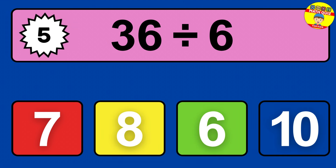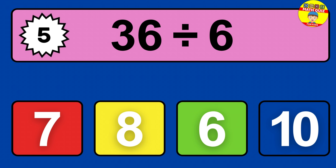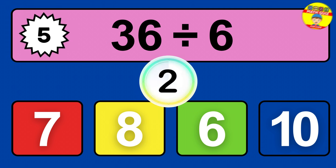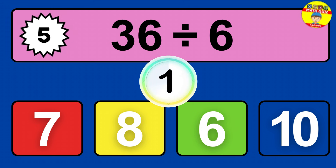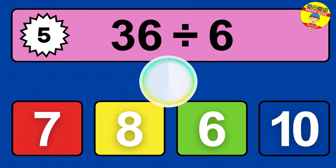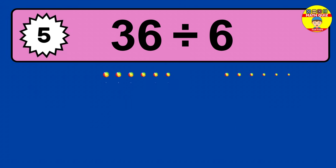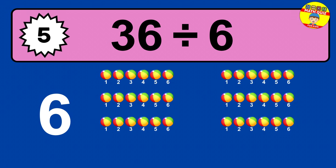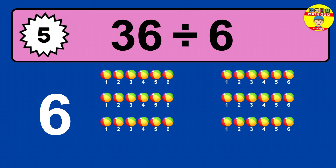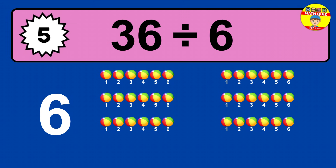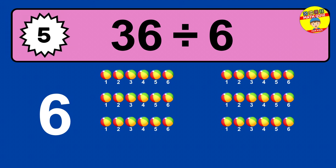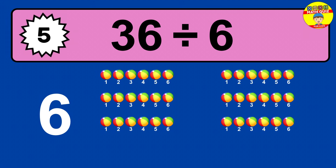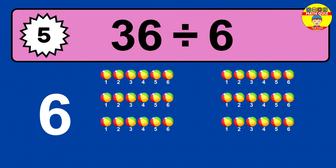36 divided by 6 — time to think. Let's go to the solution. Divide the number 36 by 6. Each group contains 6 units, so dividing 36 by 6 results in 6 equal groups. Thus, the result is 36 divided by 6 equals 6.